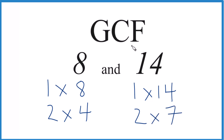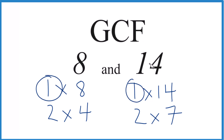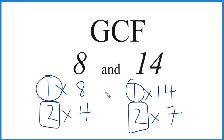So we have our factors. Now we're going to look at the common factors. So 1, that goes into 8, and 1 goes into 14 evenly. 2, that goes into 8 and 14 evenly. These are common. But that's it. So the greatest common factor for 8 and 14 is going to be 2.